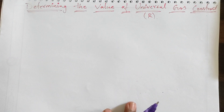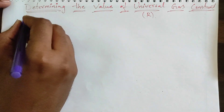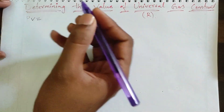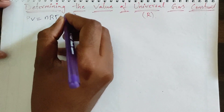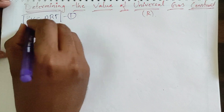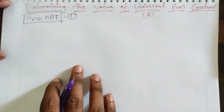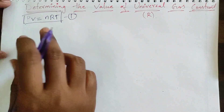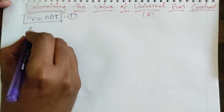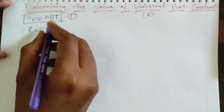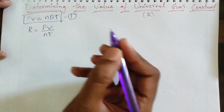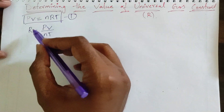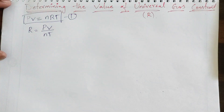In the last video we had a derivation of the ideal gas equation, that is PV equals nRT. This is equation number one. Now we are going to find the value of R. From this equation I can write R equals PV divided by nT.